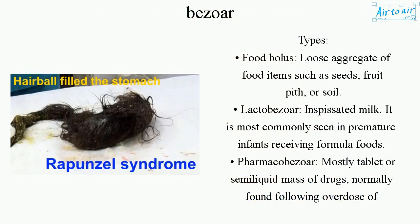Types. Food bolus: a loose aggregate of food items such as seeds, fruit pith, or soil. Lactobezoar: inspissated milk, most commonly seen in premature infants receiving formula.